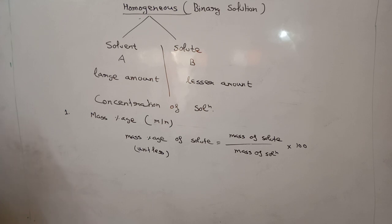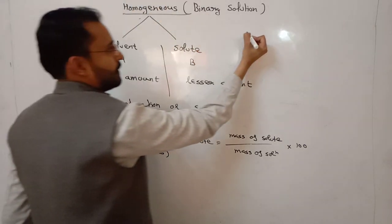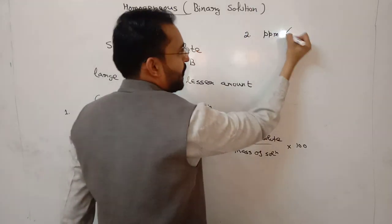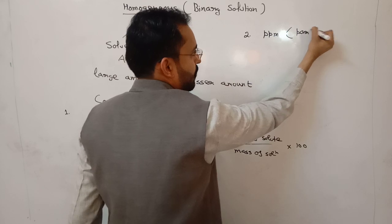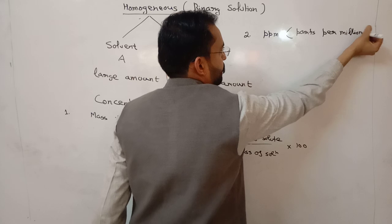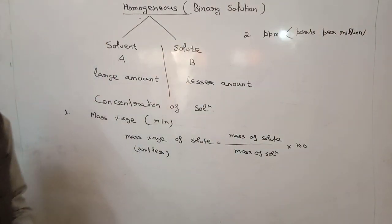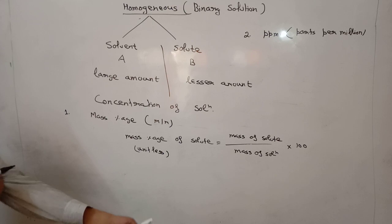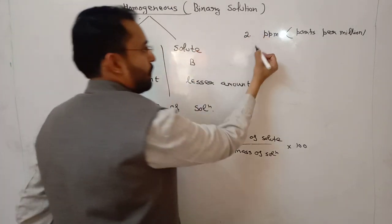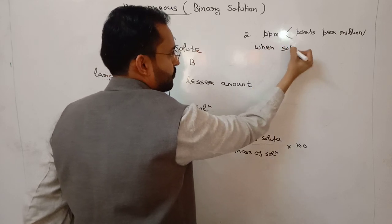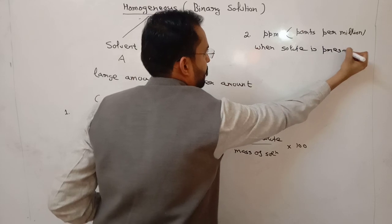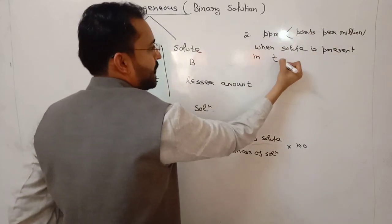Second method for representation of concentration is PPM, parts per million. This method is adopted for concentration representation when the amount of solute is very very less, when solute is present in trace amount.